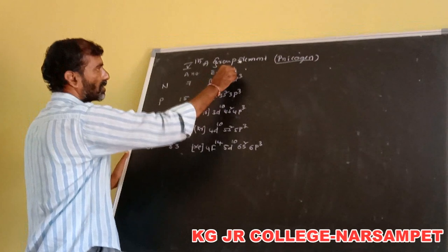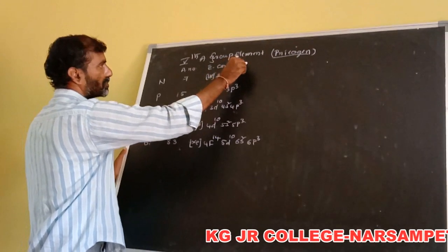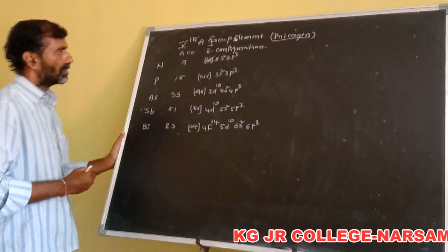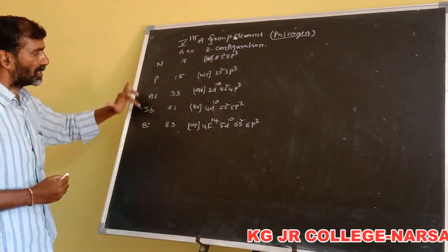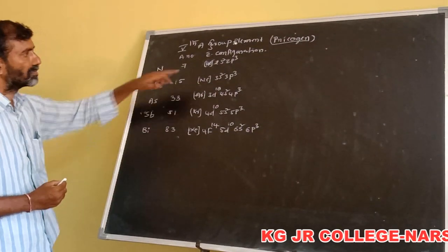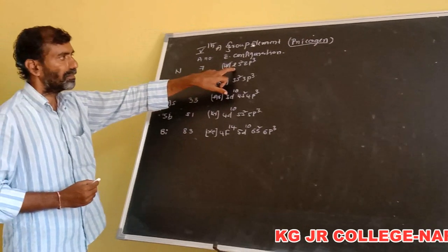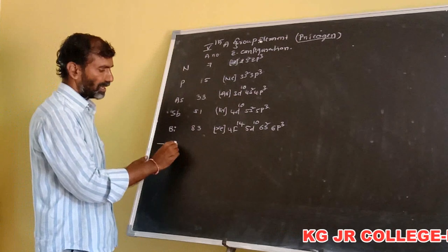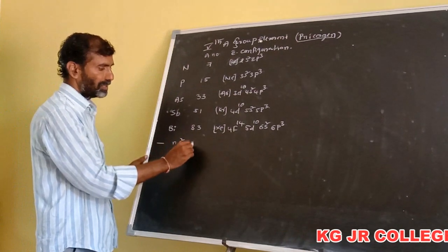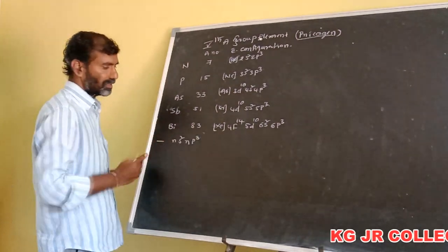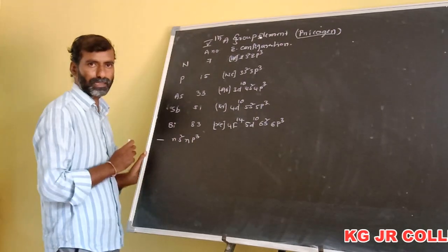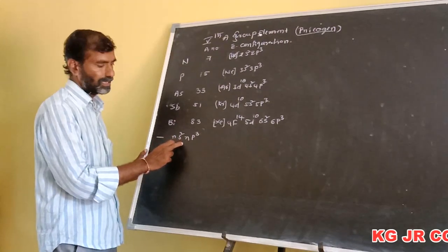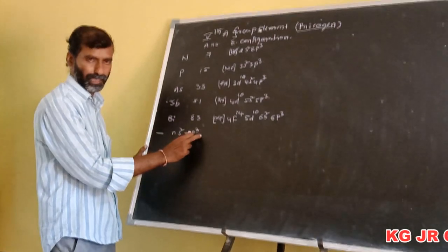The valence shell electronic configuration for nitrogen, phosphorus, arsenic, antimony, and bismuth follows the general pattern ns2 np3. That means all fifth group elements have the general electronic configuration ns2 np3.